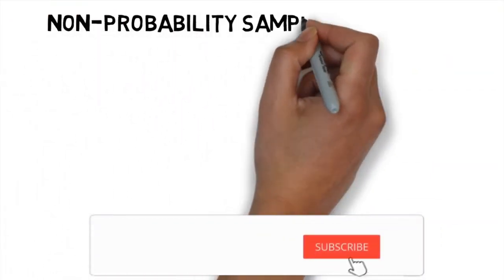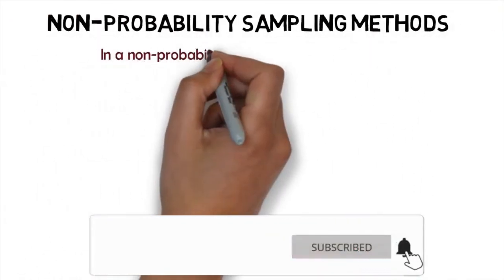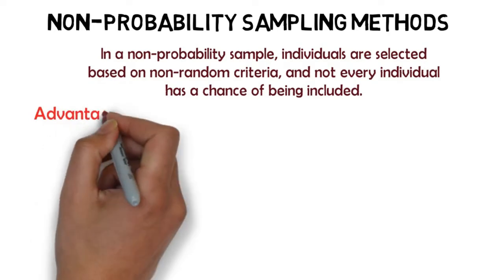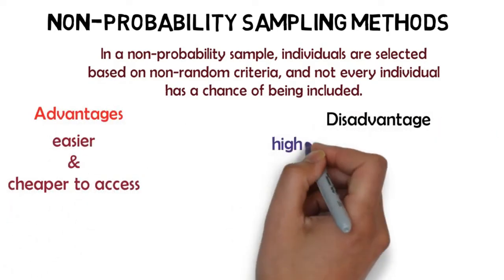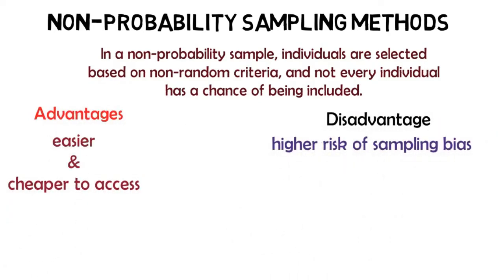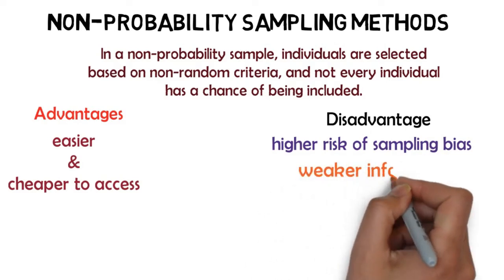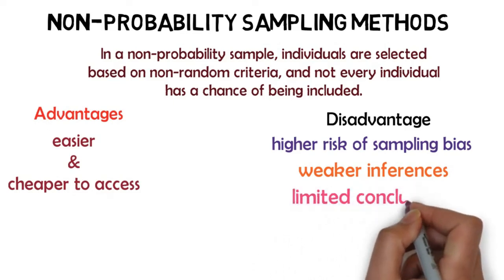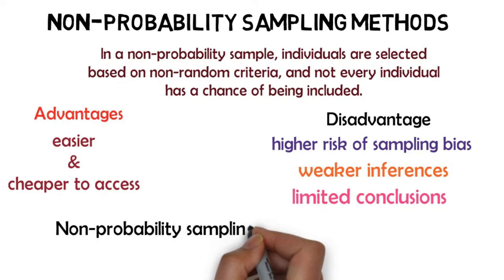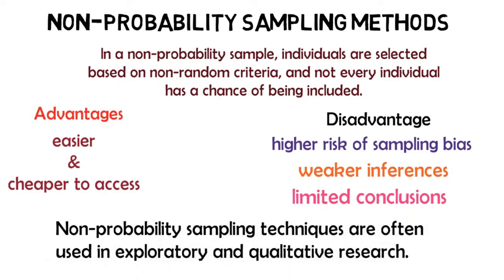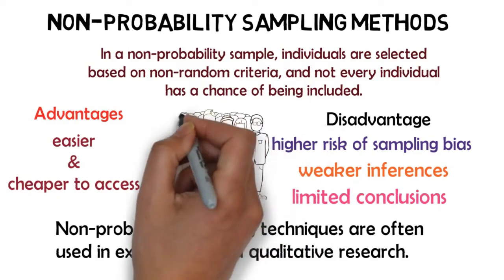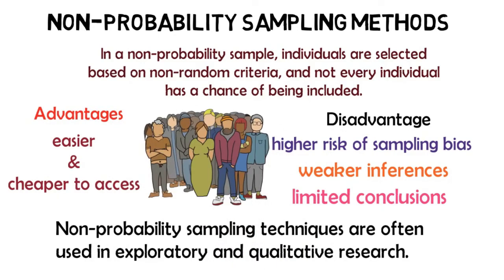The second type of sampling method is the non-probability sampling method. In a non-probability sample, individuals are selected based on non-random criteria. This type of sample is easier and cheaper to access but it has a high risk of sampling bias, meaning that inferences you can make about the population are weaker than with probability samples and your conclusions may be more limited. Non-probability sampling techniques are often used in explanatory and qualitative research, where the aim is not to test a hypothesis about a broad population but to develop an initial understanding of a small or under-researched population.